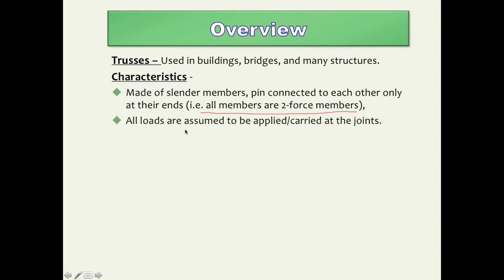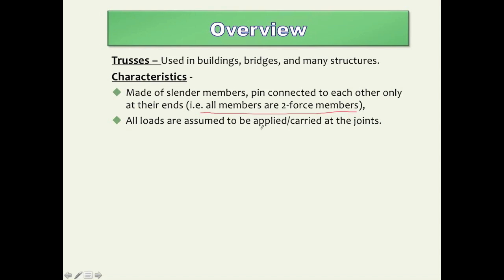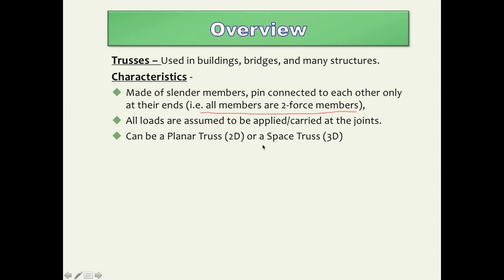Also, all external loads that act on the truss are assumed to be carried at the joints. Although this may not be physically realistic, that is the assumption we make. Even in cases where we have loads distributed over the truss, we model these loads such that they act only at the joints. The third thing to know is that trusses can be either 2D structures or 3D structures.